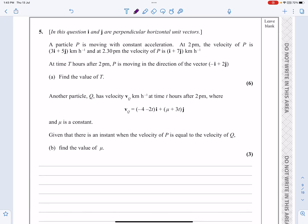Okay, this is the M1 paper from June 2021, question number five. If you have a quick look at it, we can see constant acceleration, that means SUVAT, and we can see we've got vectors involved all the way through here, so two different topics really, vectors and SUVAT put together.